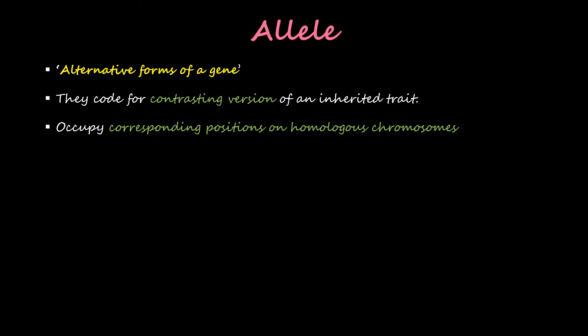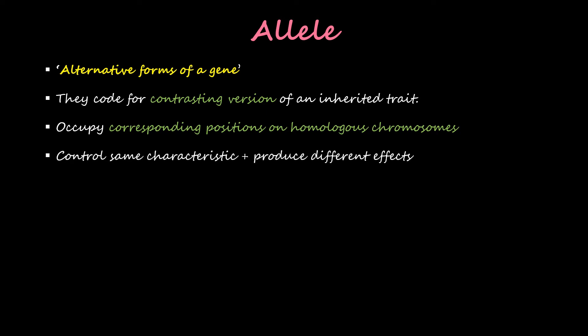Alleles occupy corresponding positions on the homologous chromosomes, and the dominant one is going to express itself in that particular organism. They control the same characteristic but produce different effects — so if the characteristic is height, then the different effects will be tall and short.